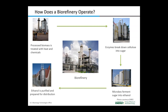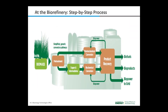Finally, the ethanol is cleaned and purified in preparation for distribution to gas stations, airports, and other uses. There are two main conversion pathways to turn biomass into products like biofuels, bioproducts, and biopower: first, thermochemical conversion, and second, biochemical conversion.